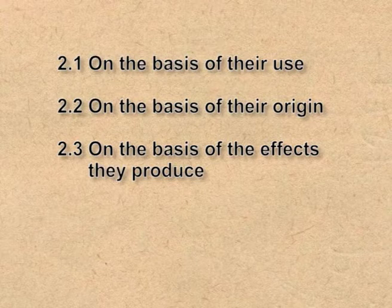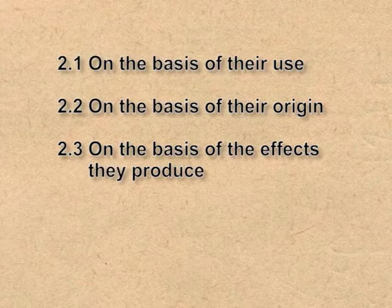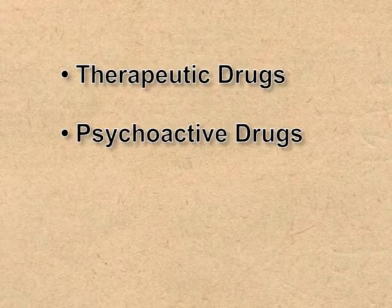Drugs may be classified in three ways: the first is on the basis of their use, the second is on the basis of their origin, and the third is on the basis of the effects they produce. On the basis of their use, different drugs can be classified into two heads: therapeutic drugs and psychoactive drugs. Although both of these categories often overlap, due to specific usage and wide range, psychoactive drugs are treated as a distinct class.